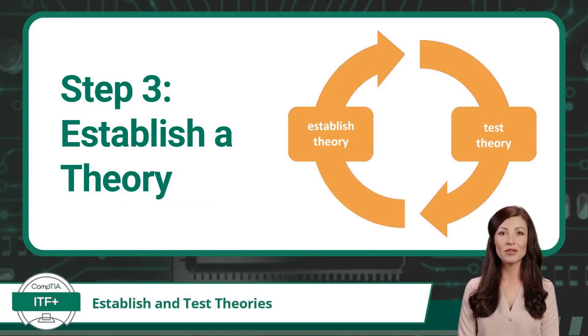Step 3 in CompTIA's troubleshooting process is to establish a theory of probable cause. This step is closely related to Step 4, which is to test the theory and determine the cause. These two steps may also be repeated as many times as necessary, as sometimes our initial theory is wrong. If at first you don't succeed, try again.